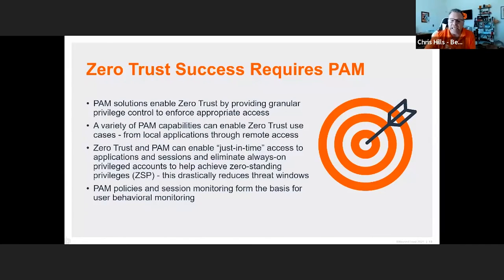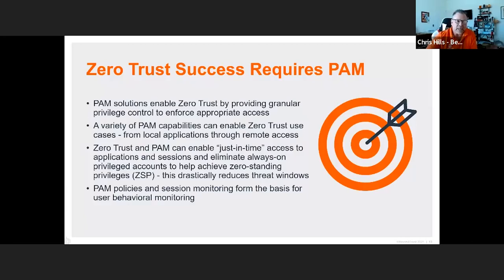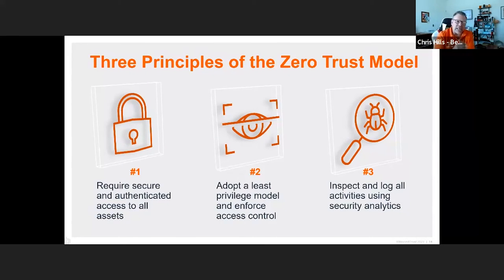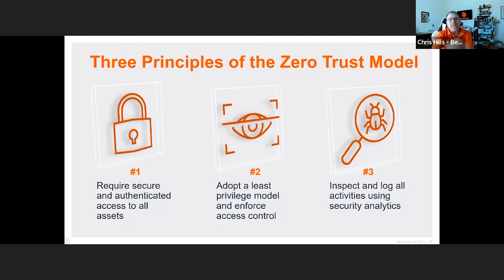There are three core principles of the Zero Trust model. First, require secure and authenticated access to all assets — this falls under the segmentation pillar. Second, adopt a least-privilege model and enforce access control — this is the micro-segmentation piece. Third, log and inspect all activities. This isn't about just checking a box and sending logs to a SIEM or Splunk never to be seen again — someone needs to be actively reviewing those logs to find anomalies in behavior and respond. That active review is a key component of Zero Trust.